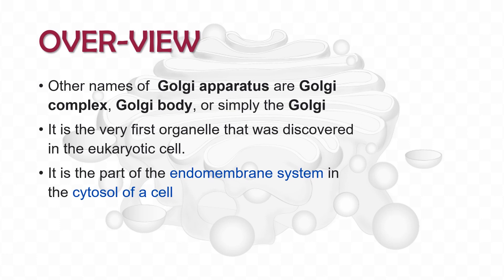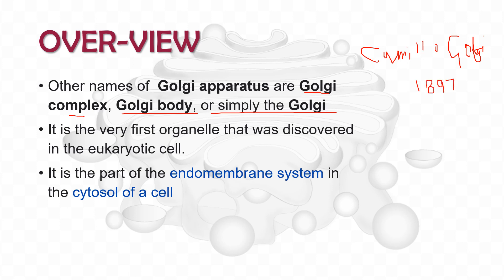The Golgi apparatus is also known as the Golgi complex, Golgi body, or simply the Golgi. Camillo Golgi identified this structure in the cytoplasm of a eukaryotic cell in 1897, and it was named after him in 1898. It is the very first organelle that was discovered in the eukaryotic cell, and it is part of the endomembrane system in the cytosol of a cell.